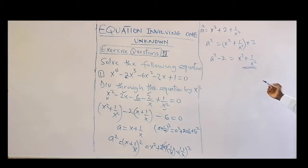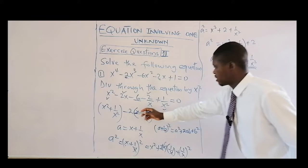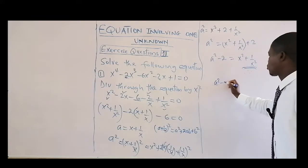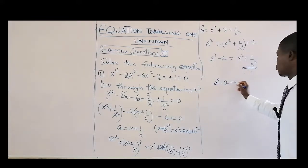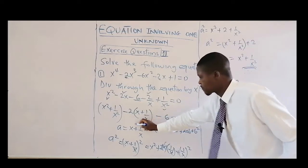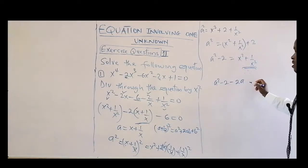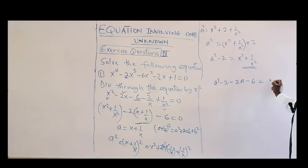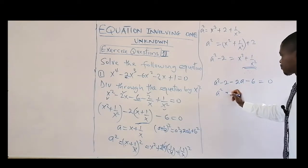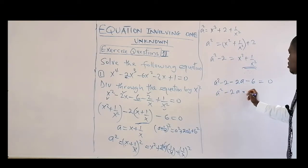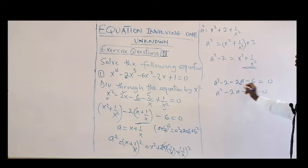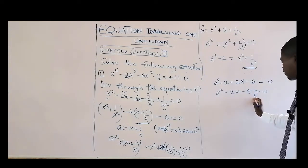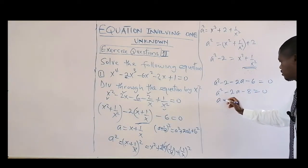Now we substitute into the equation. We replace x² + 1/x² with (a² - 2), and the term with x + 1/x becomes minus two times a. So the equation becomes a squared minus two, minus two a, minus six, equal to zero.